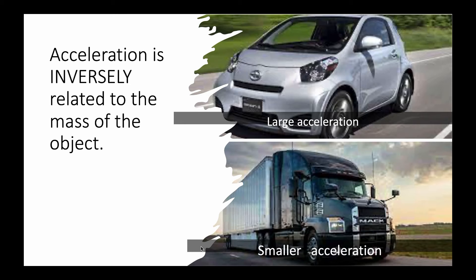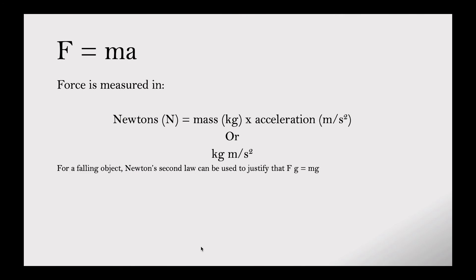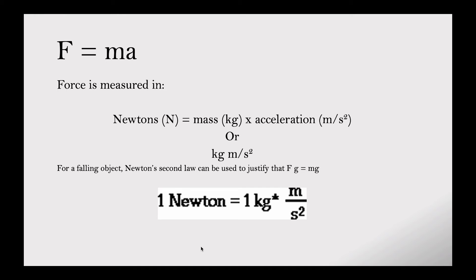Acceleration is inversely related to the mass of the object — a small car has large acceleration, while a large truck has smaller acceleration. F equals ma: force measured in newtons equals mass in kilograms times acceleration in meters per second squared. For a falling object, Newton's second law gives Fg equals mg, where force of gravity equals mass times gravitational acceleration. One newton equals one kilogram·meter per second squared.